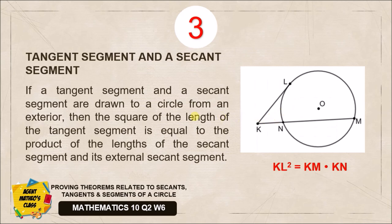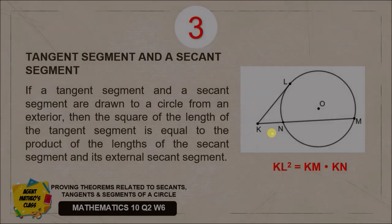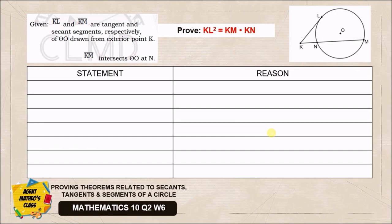The result when we have this theorem is we are just squaring the tangent segment, which is KL in our drawing. This will be equal to the product of the whole part of our secant segment represented by KM, multiplying that to the external segment which is KN. We'll use a two-column proof for this.